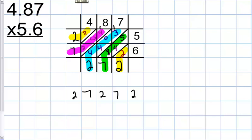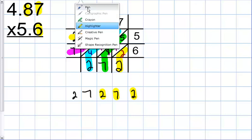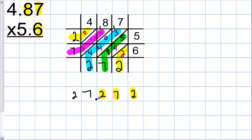Going back to the original problem, I highlight 1, 2, 3 place values to the right of the decimal point. That means in my product, I need 1, 2, 3 place values to the right of the decimal point. After I highlight those three numbers, I put my decimal point, so my answer is 27.272.